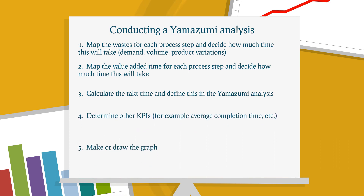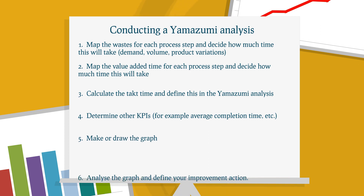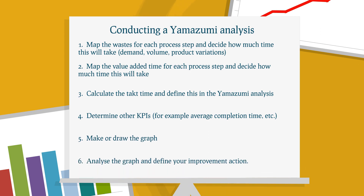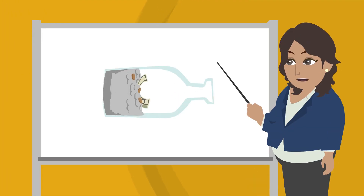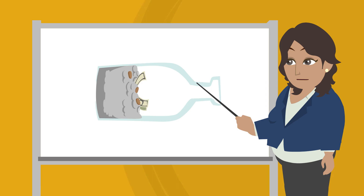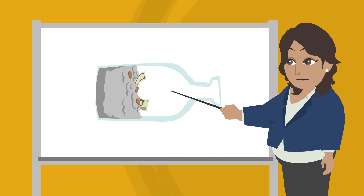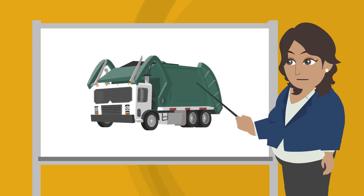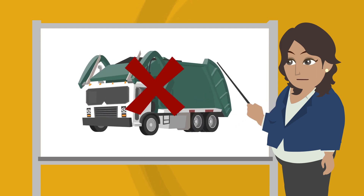Step 5: Make or draw the graph. Step 6: Analyze the graph and define your improvement action. The most important thing with the Yamazumi is mapping where the bottlenecks in the process steps are. Identifying these bottlenecks means that activities can be divided and wastes can be eliminated.